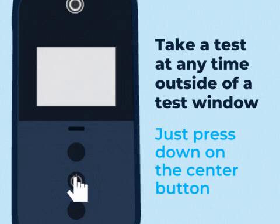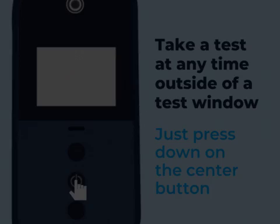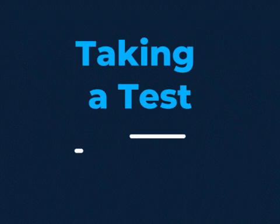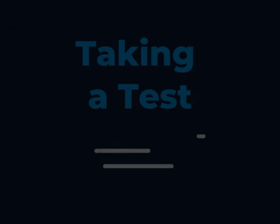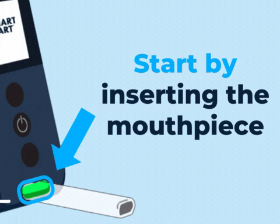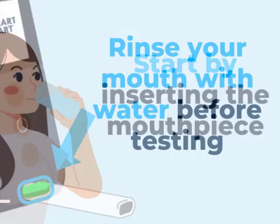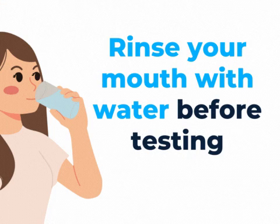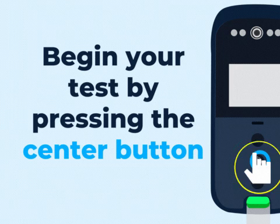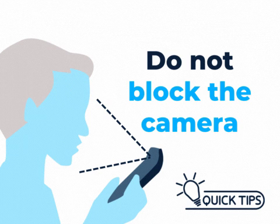Just press down on the center button. Start by inserting the mouthpiece into the device. It's important to rinse your mouth with water before testing in order to ensure an accurate reading. Begin your test by pressing the center button. Hold your Smart Mobile Insight as shown and do not block the camera.